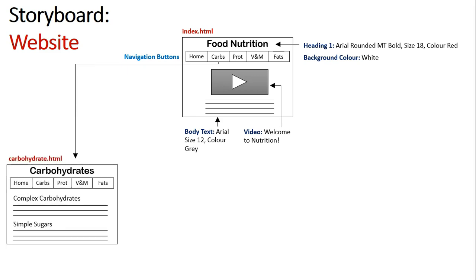From here we start to say what the navigation buttons do. When you click on 'Carbs' it takes you to a sub-page called carbohydrates.html, which is a page all about carbohydrates. We break down what happens on this page — I am highlighting what the text on this page is going to be. I have used lines to represent the text because this is a design planning tool, but by describing the headings I can ensure consistency with the home page.